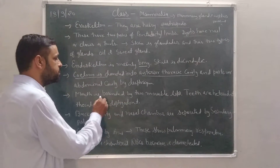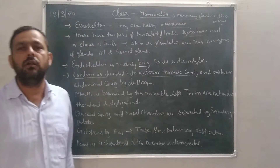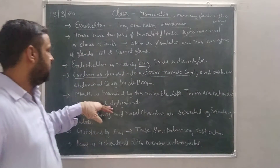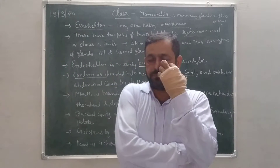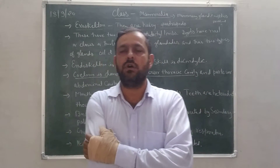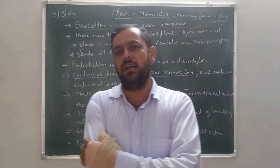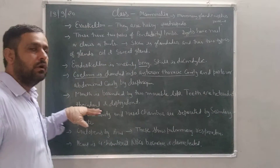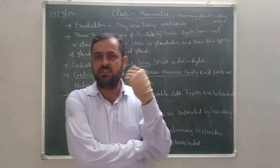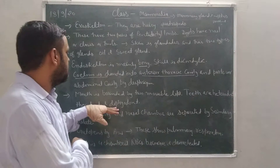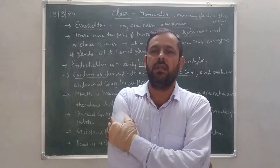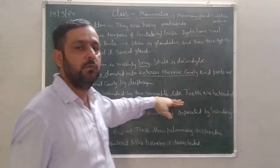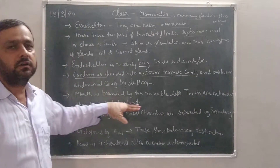Next character: the mouth is bounded by two movable lips. Teeth are heterodont, thecodont, and diphyodont. Heterodont means four types of teeth are found — incisor, canine, premolar, and molar. Thecodont means they are embedded in a jaw cavity. Diphyodont means two types of teeth are present: milky teeth and permanent teeth.